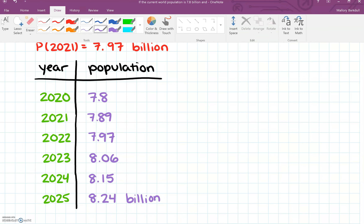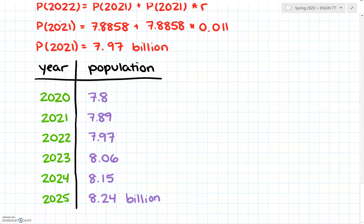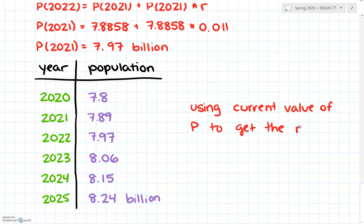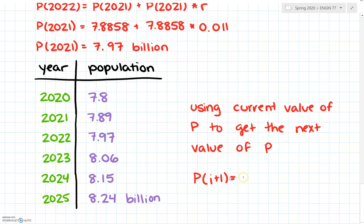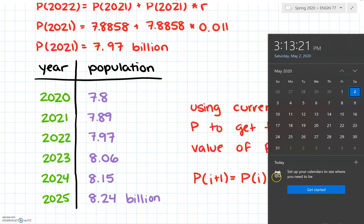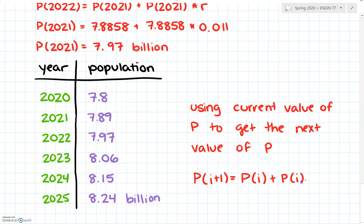Essentially what we've done is use the current value of p, the population, along with the rate of change of p, to get the next value of p. So p_i+1 equals the population at time i plus the population at time i times r — and that rate of change term is our derivative.